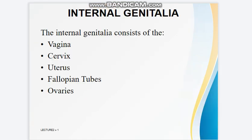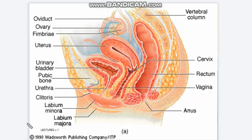The internal genitalia consists of the vagina, cervix, uterus, fallopian tubes, and ovaries. The vagina connects the cervix to the external genitals; it is located between the bladder and rectum. It functions as the passageway for menstrual flow and uterine secretions to pass down through the introitus, as the birth canal during labor, and it receives the penis during sexual intercourse.